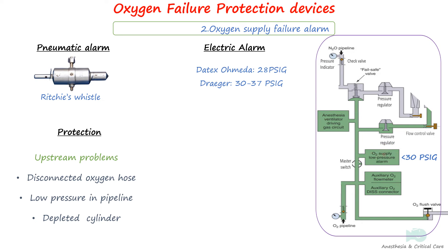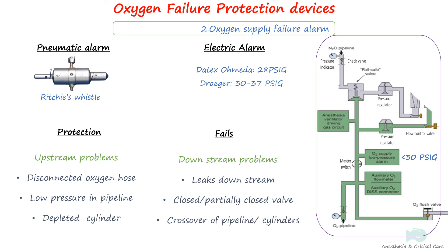These devices do not offer protection against a hypoxic mixture being delivered, as they do not prevent anesthetic gas from flowing if there is no flow of oxygen. Equipment problems like leaks, operator errors like closed or partially closed valves, and accidental crossover on pipeline cylinders are not prevented by this device.